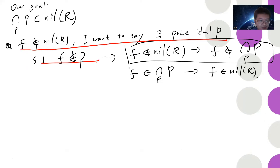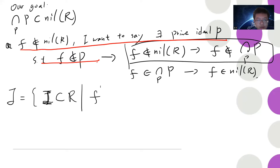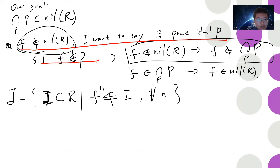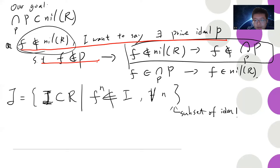The trick is to define J to be the set of all ideals I of R such that f^n ∉ I for all n ≥ 0. That is, I does not contain any power of f. J is a nonempty partially ordered set of ideals. By Zorn's lemma, J has a maximal element.